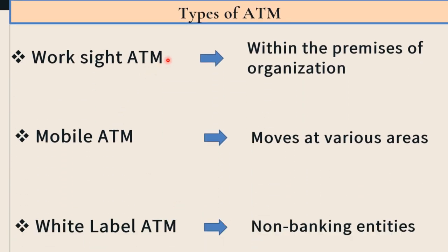The fourth type of ATM is Work-site ATM. The work-site ATM is installed within the premises of an organization. The workers or employees working in that particular organization can avail banking services within the premises of that organization where they are working. So this ATM is known as Work-site ATM, which is installed at the working place and the employees of that organization can avail banking services through it.